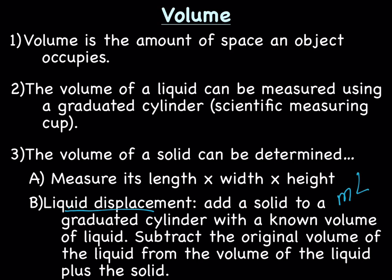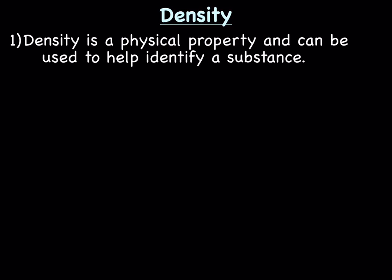Next up is density—the whole point of the lecture. Density is a physical property, and it can be used to help identify a substance. Different substances have different densities. The definition of density is it's the ratio of mass to volume, which is why we started talking about mass and volume.